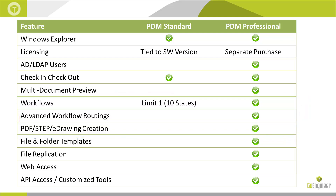PDM Professional also provides the capability to create files and folder structures from templates. These templates can also optionally use serial numbers to name the files and/or folders — another capability only available in Professional.